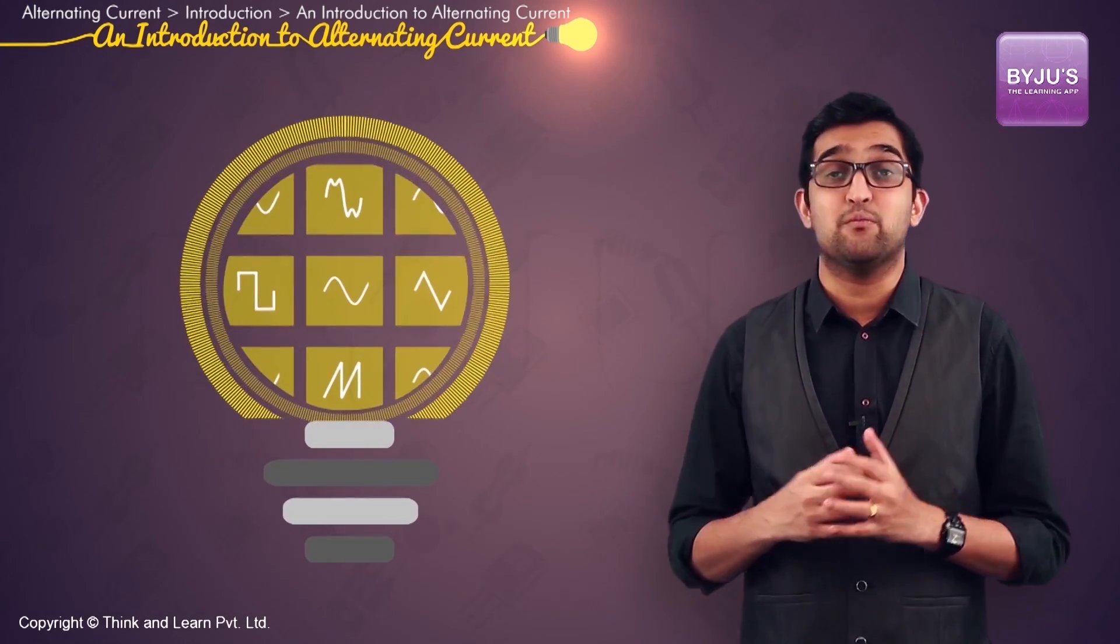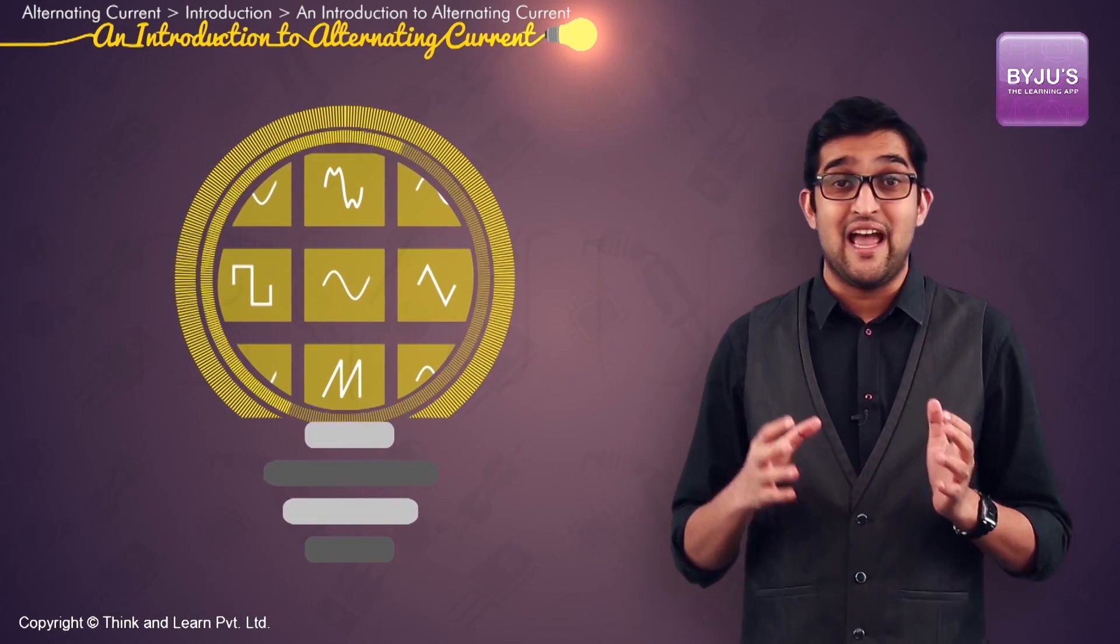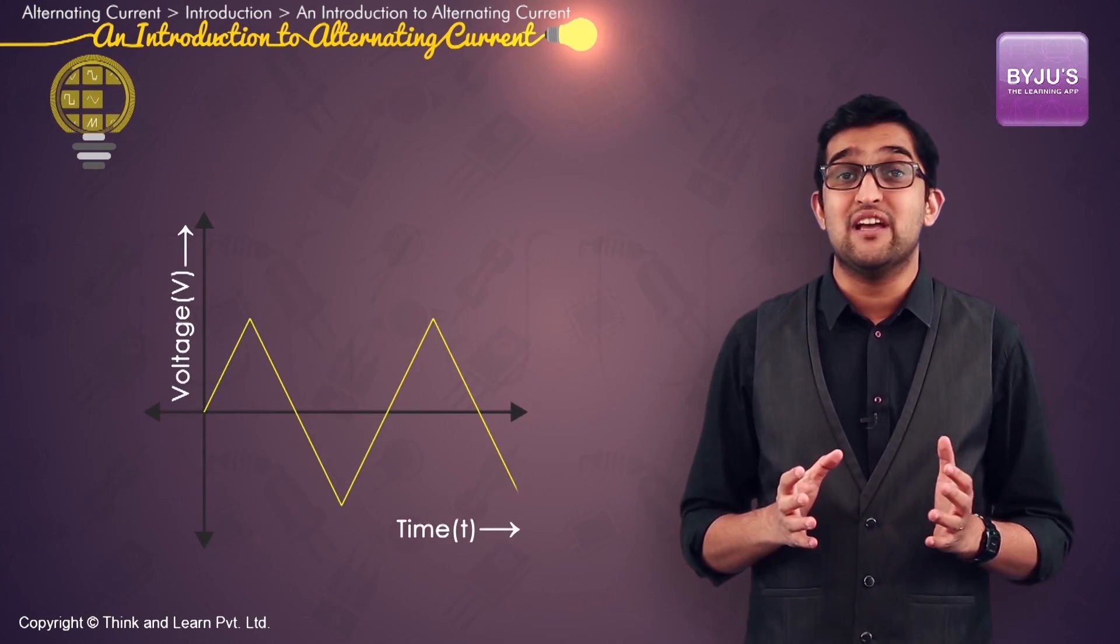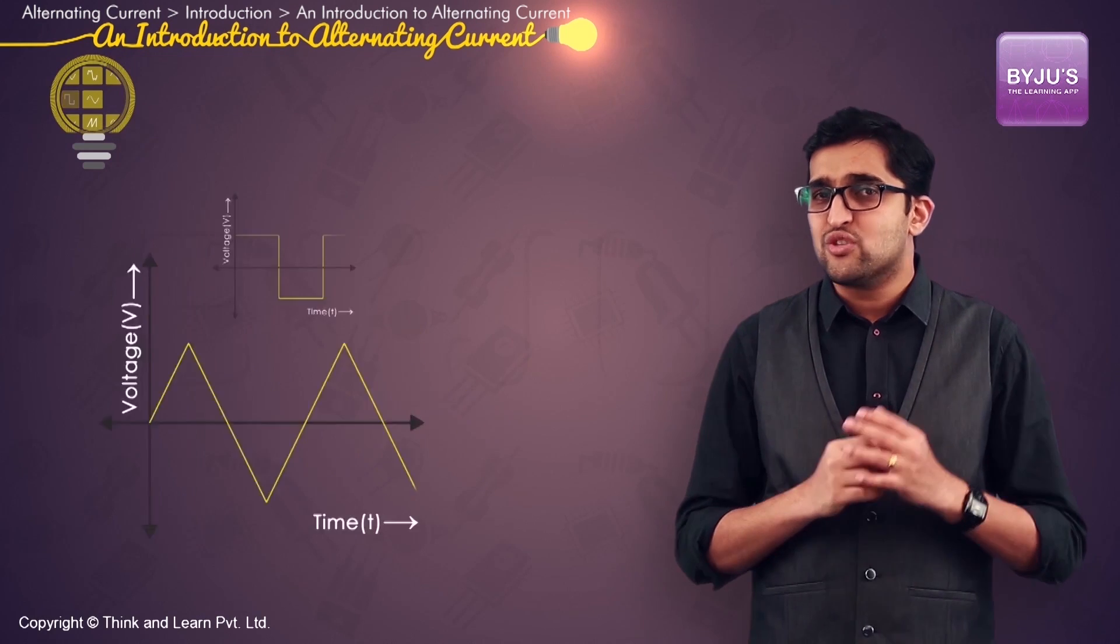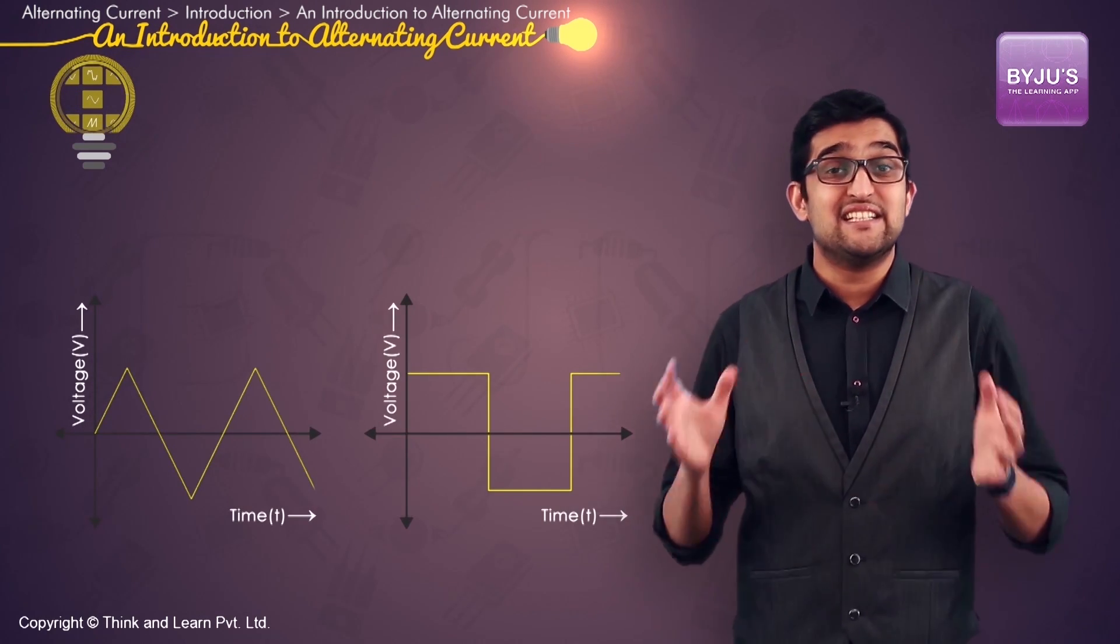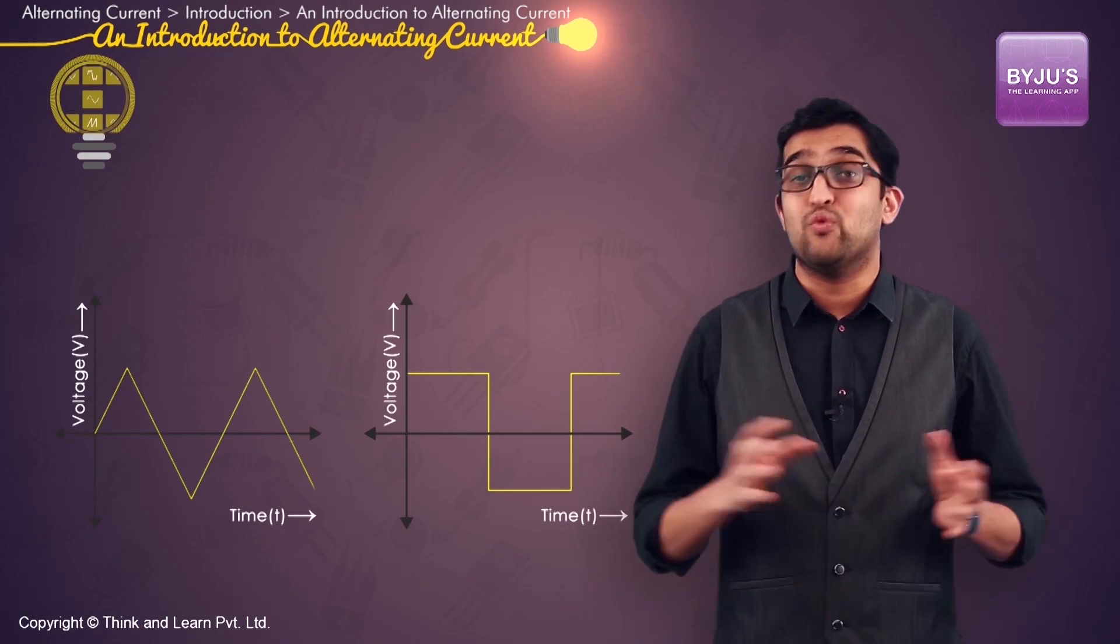There are lots of variations possible for an AC and accordingly so many shapes. A triangular wave like the one you see here, or a square wave like this. Note the fact that they are changing their polarity cyclically with time.